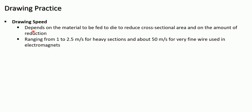Now let us see drawing speed. Drawing speed depends on the material to be fed to the die and on the amount of reduction. Drawing speed ranges from 1 to 2.5 meter per second for heavy sections and about 50 meter per second for very fine wire used in electromagnets.